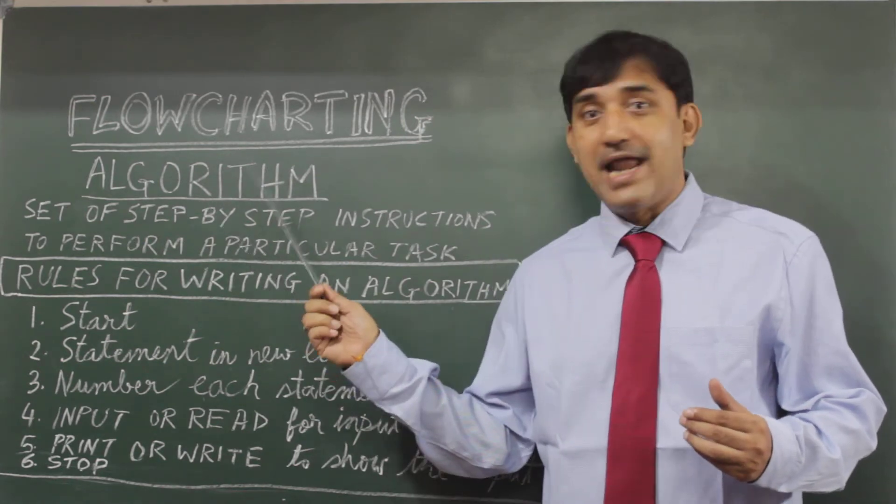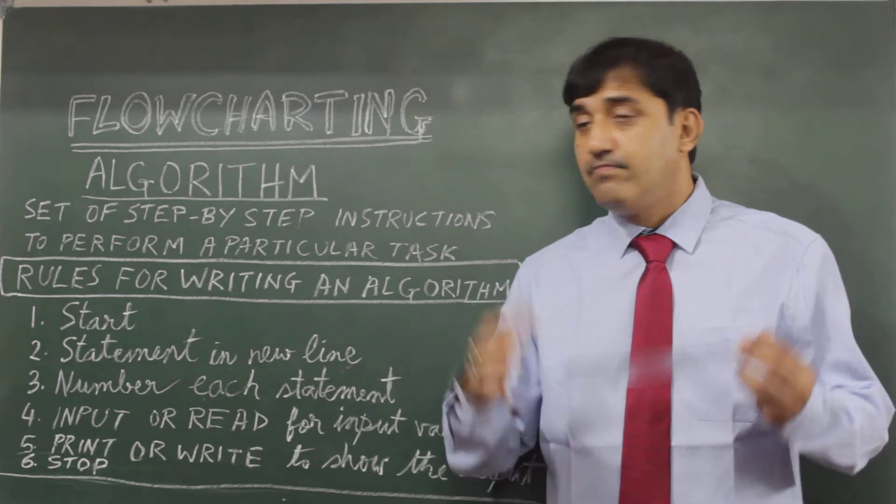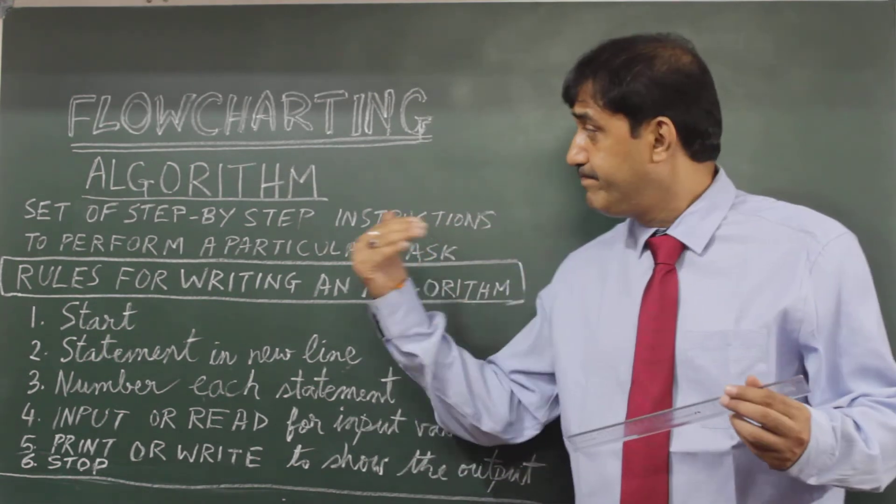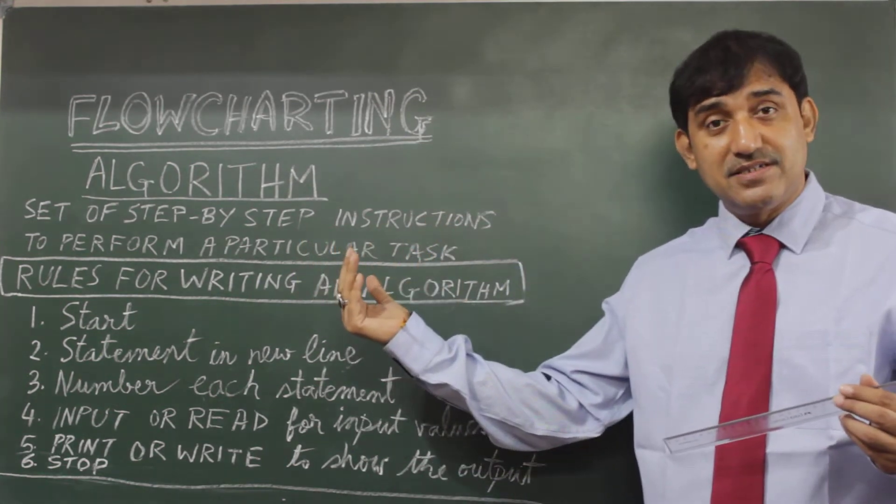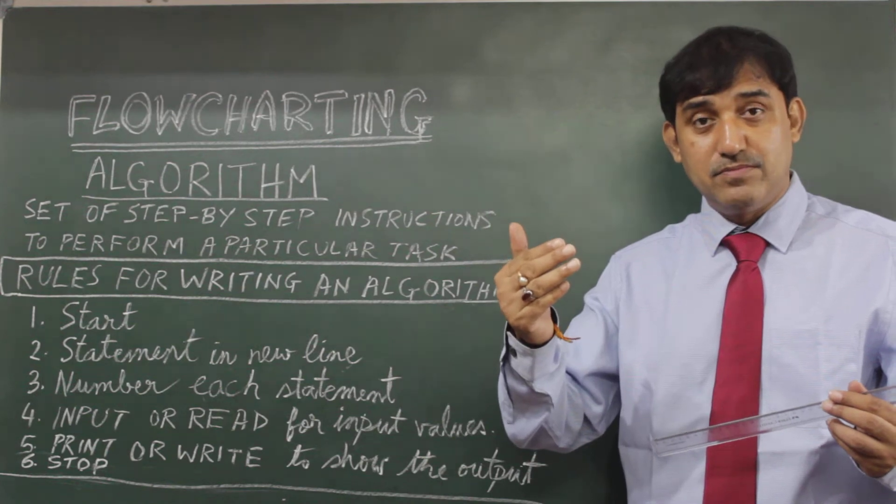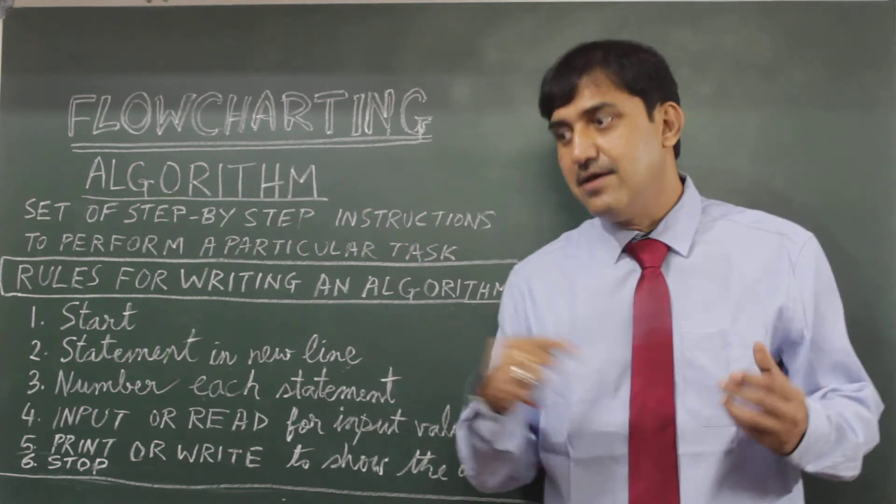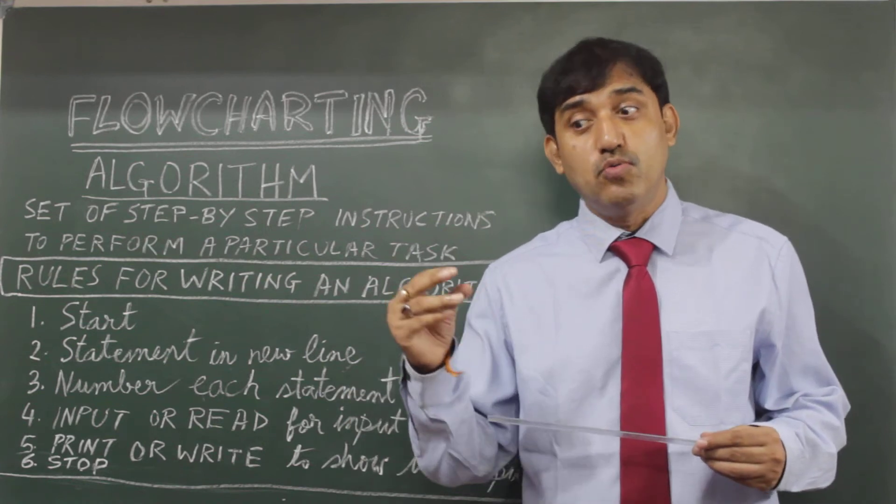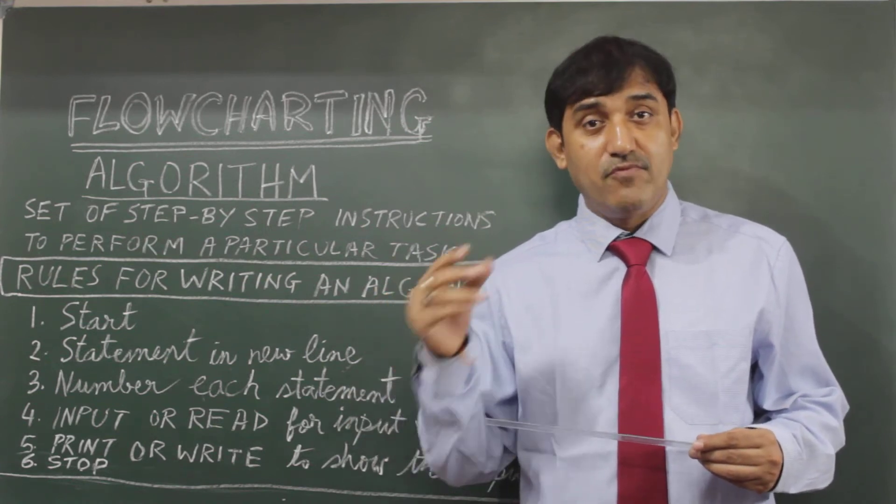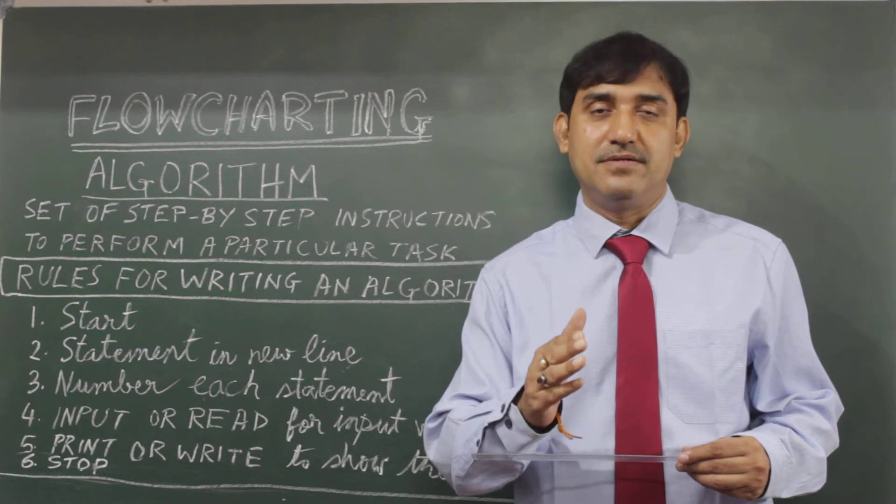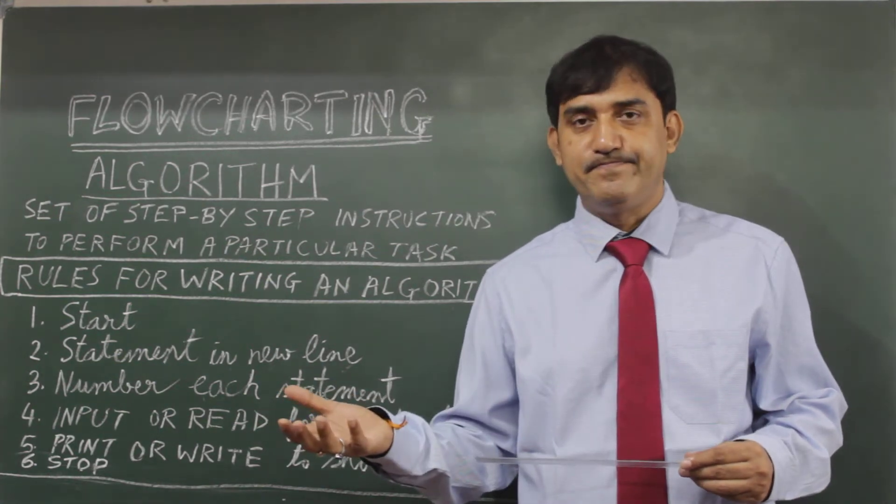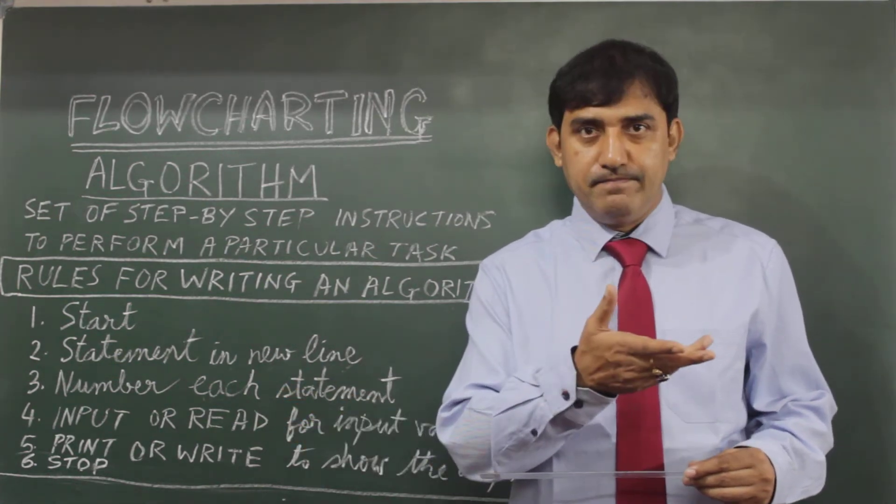An algorithm is step-by-step instructions given to a computer to perform certain tasks. What is the task? The task is the goal to achieve when a particular assignment is given. It can be a problem, it can be a program, anything that you are dealing with.